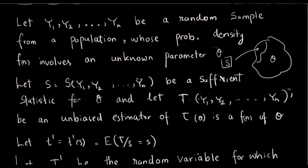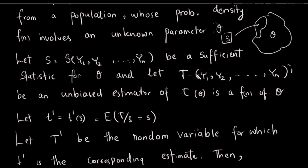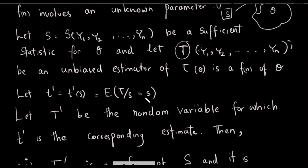If we choose a statistic, then we should use an unbiased estimate function. This is the function of y1, y2, ..., yn. This is the function of T-dash, which is a function of the sufficient statistic. This is the function of the conditional expectation, and this is unbiased.